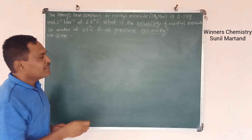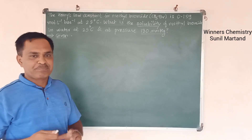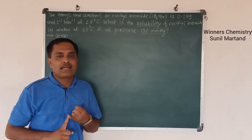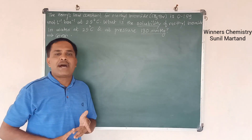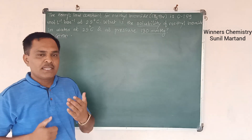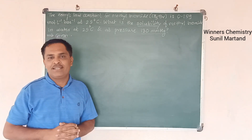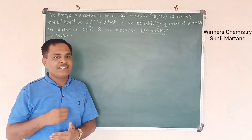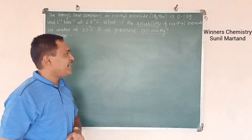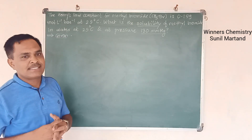You must remember that mmHg is one unit of pressure. We use different units for pressure such as bar, atmosphere, pascal, newton per meter square, and millimetre of mercury. All these units are interconvertible in nature. Here, we are asked to calculate the solubility of methyl bromide in water at 130 mmHg.